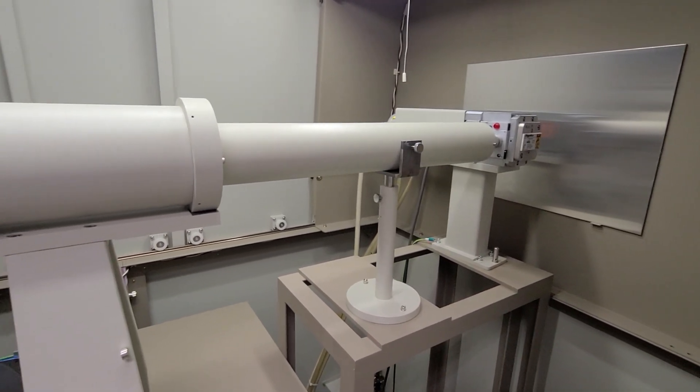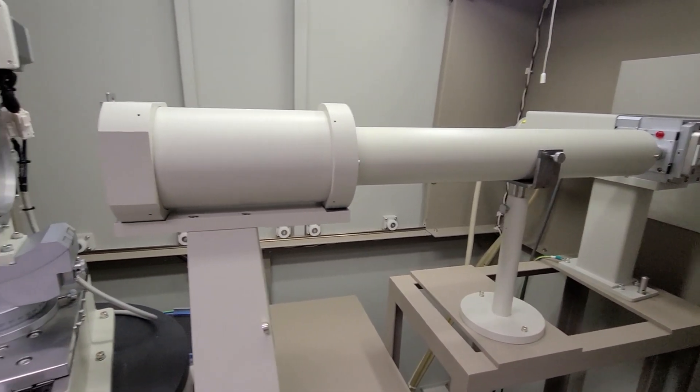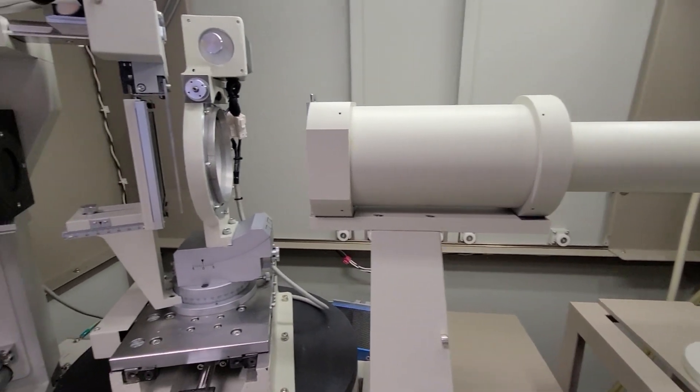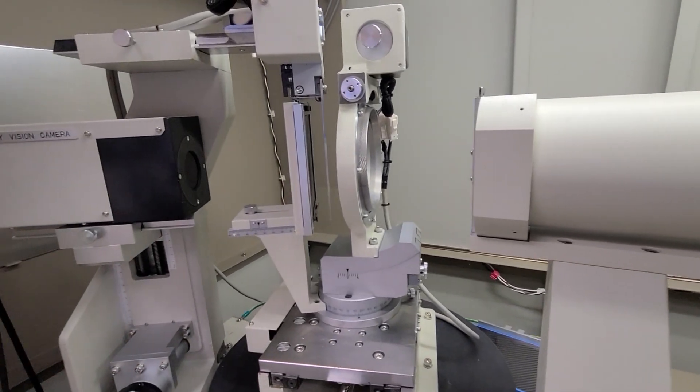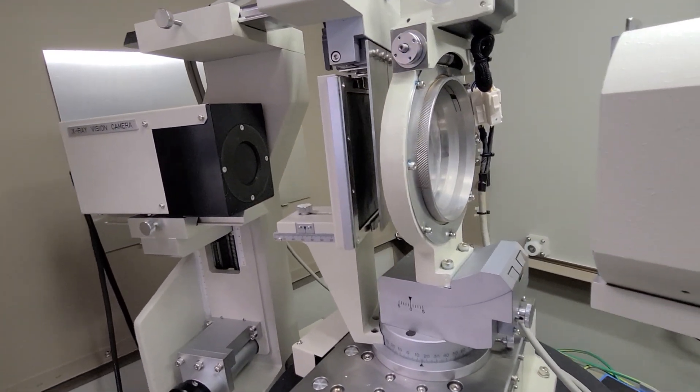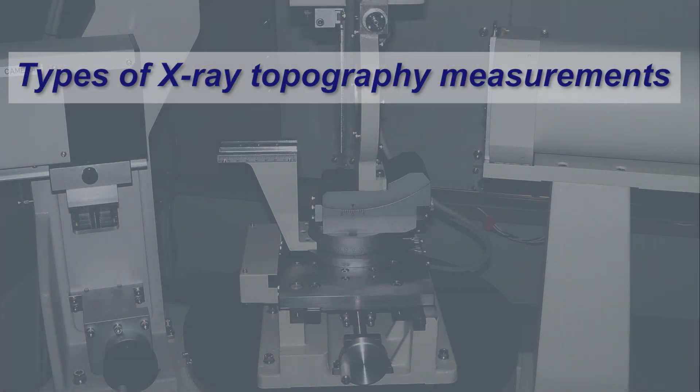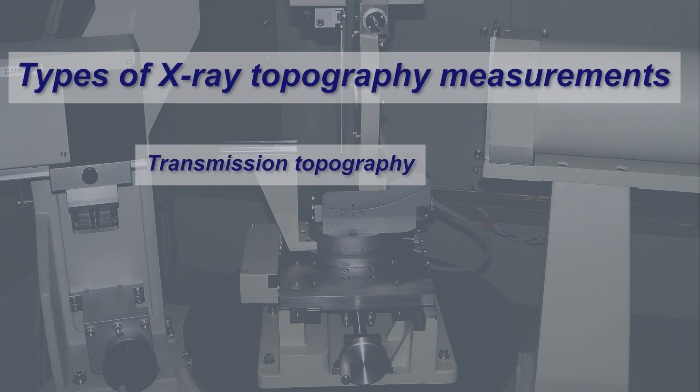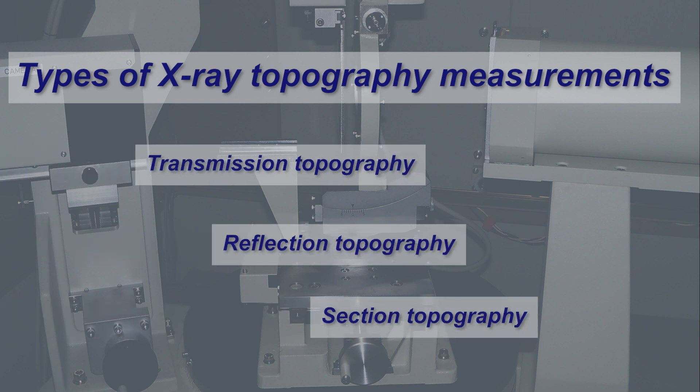We can measure samples up to 100 millimeters in diameter with each image. For larger samples, multiple images can be stitched together to form a larger image. There are multiple types of X-ray topography measurements: transmission topography, reflection topography, and section topography are the most common.